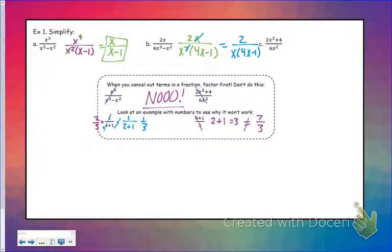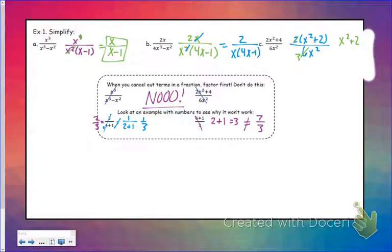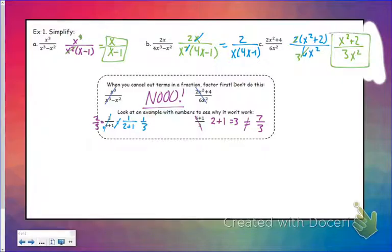Same thing on the last one — do not just cancel and say it's 3. We need to factor. 2 comes out of the top and bottom. Now 2 and 6 are both divisible by 2, so I'm left with x squared plus 2 over 3x squared. And that is your best answer.